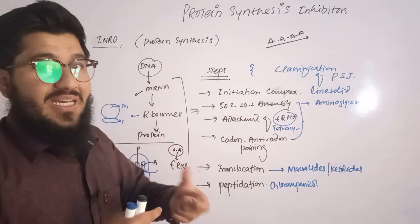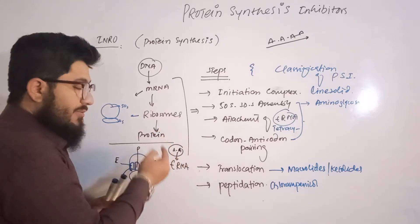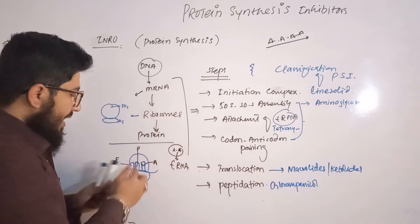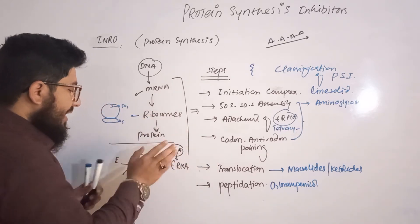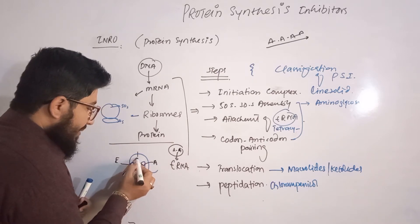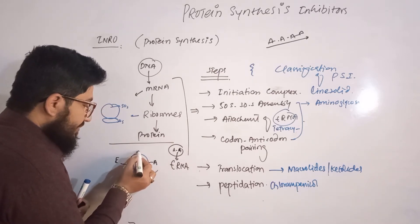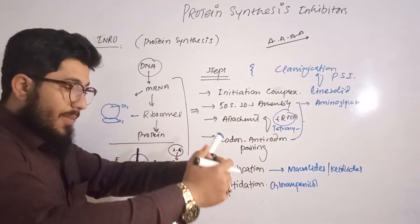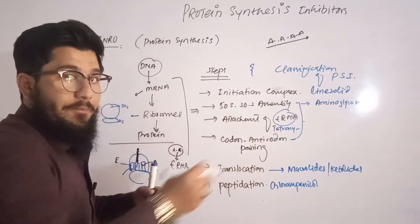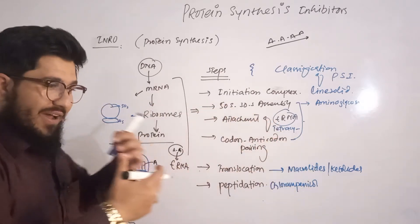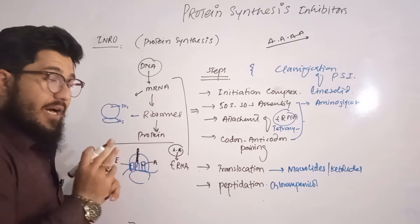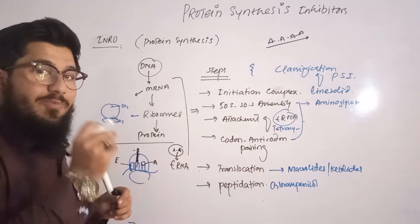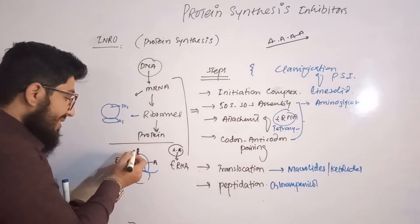After translocation, the result is peptidation — peptides are formed. One amino acid is brought by one tRNA, the next amino acid by the next tRNA, and so on. Each tRNA places its amino acid at the P region, and they chain up together. When the chaining reaches its endpoint, our protein is synthesized and becomes functional.